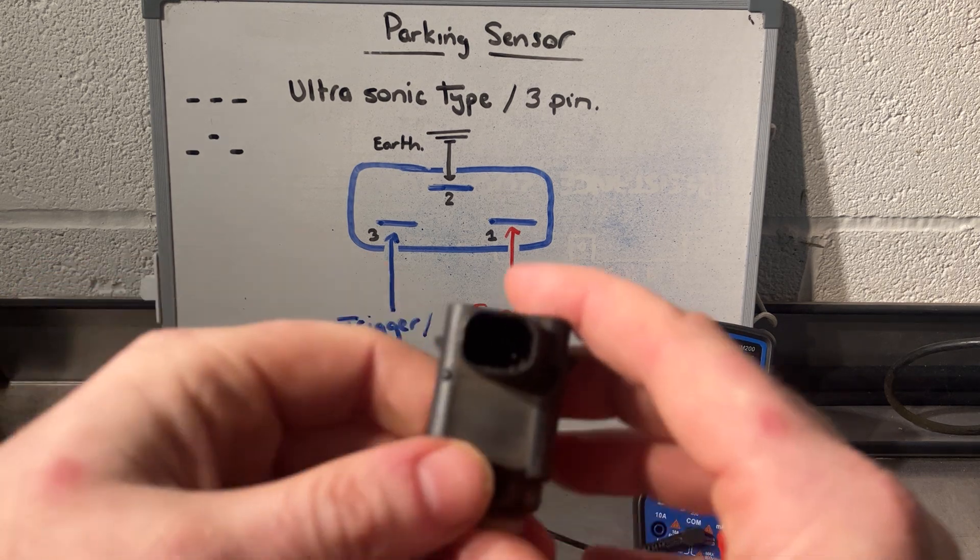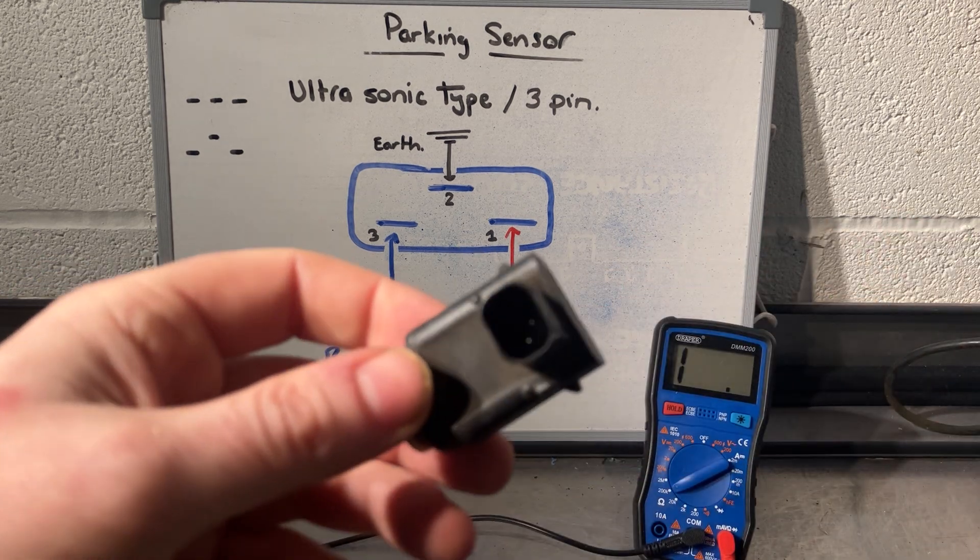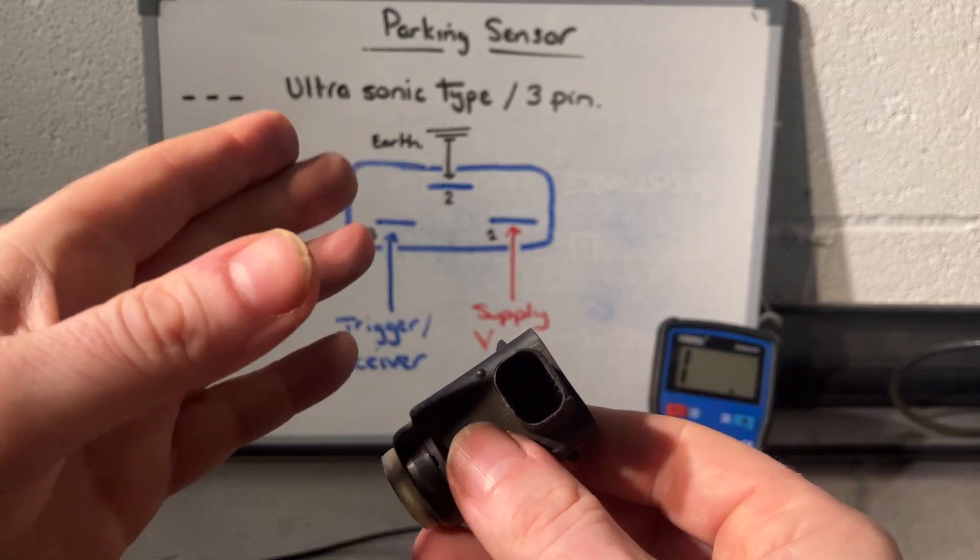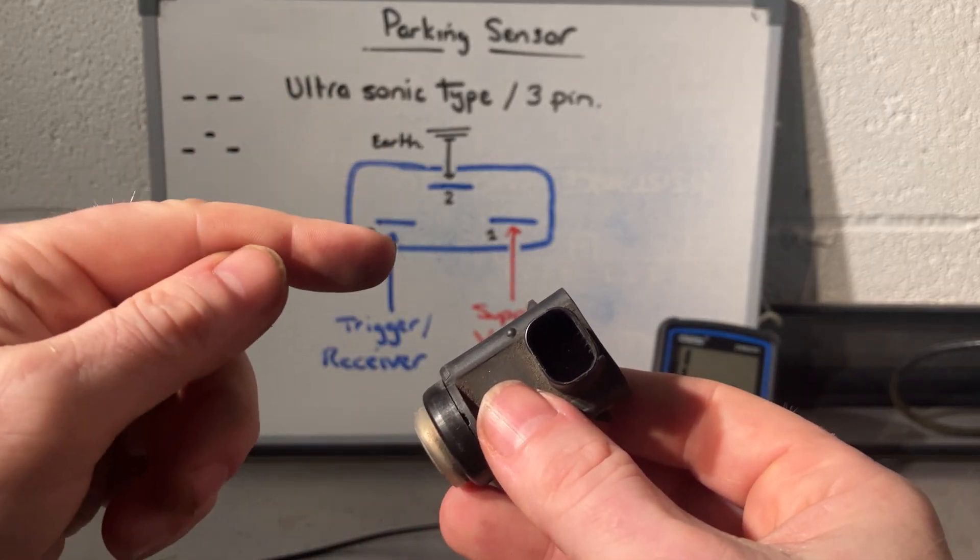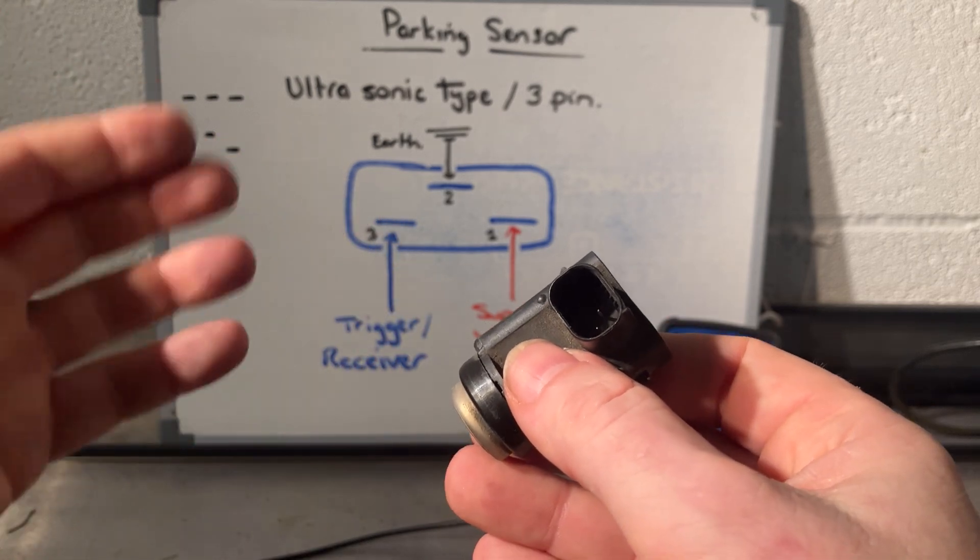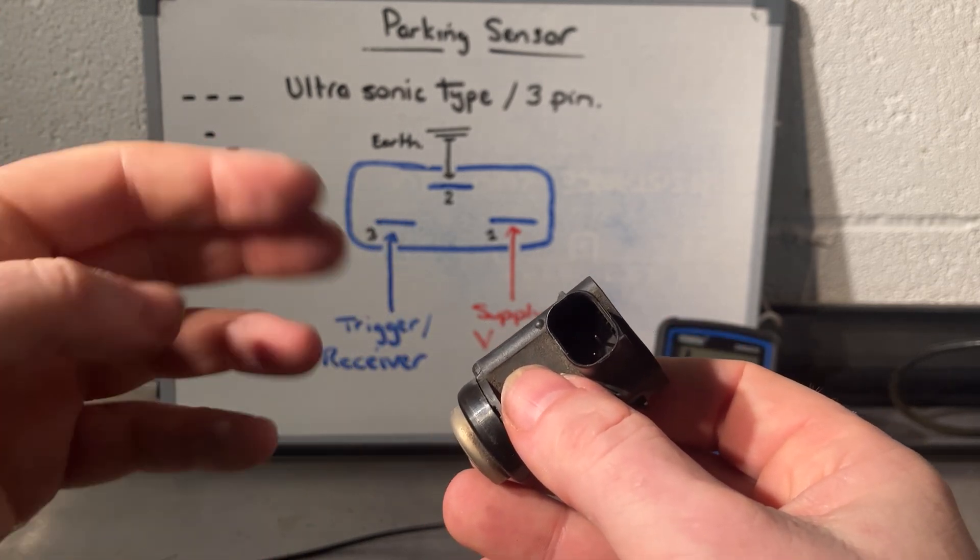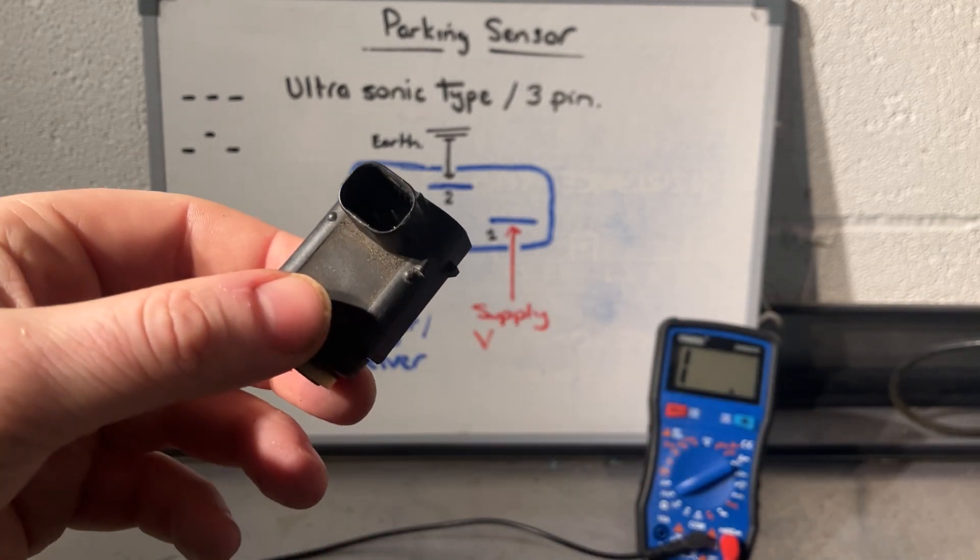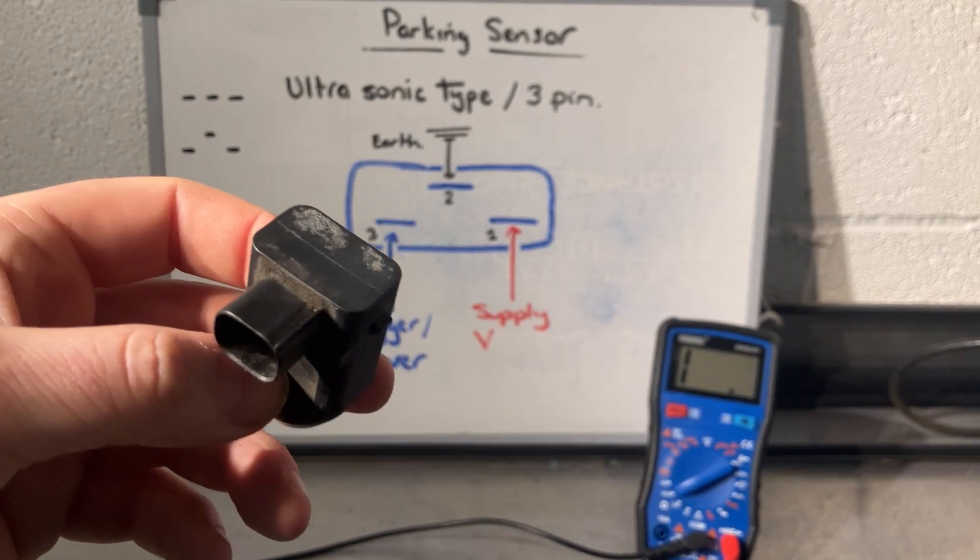And then number three is the trigger. The trigger is the signal coming from the ECU telling it to send out the ultrasonic waves. And then the same pin is receiving that ultrasonic bounce back and going to the ECU and being converted into a distance for you to know how far the object is.